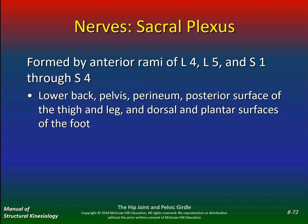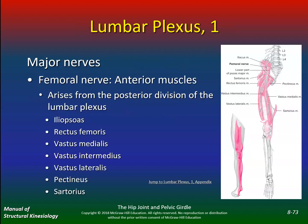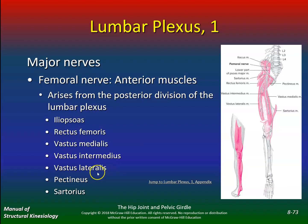The sacral plexus is formed by the anterior rami of L4, L5, and S1. On exam 2, I might ask: the femoral nerve innervates which muscles? The answer is iliopsoas, rectus femoris, vastus medialis, vastus intermedius, vastus lateralis, pectineus, and sartorius.